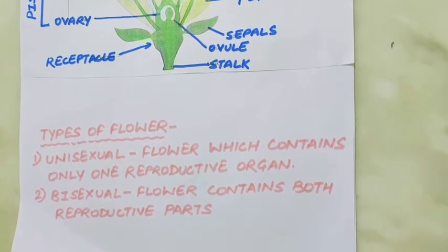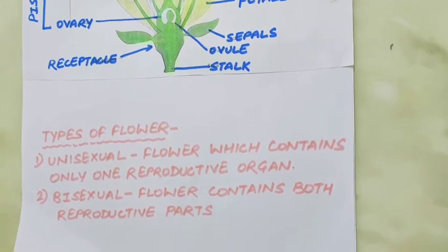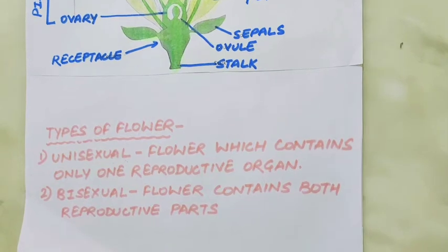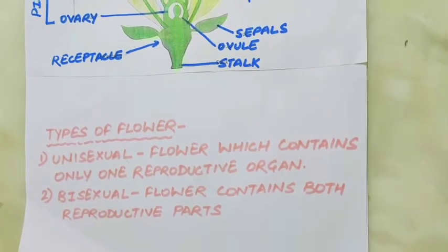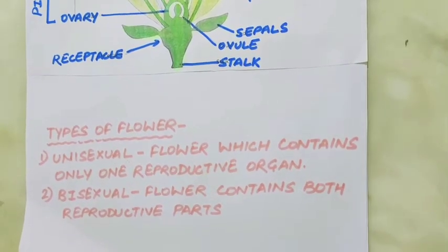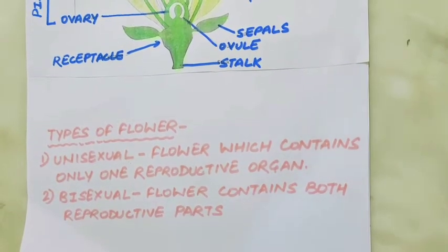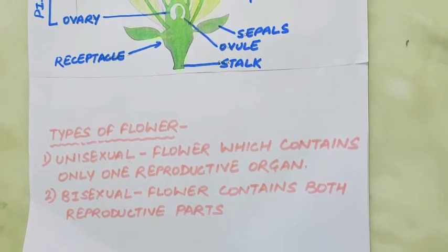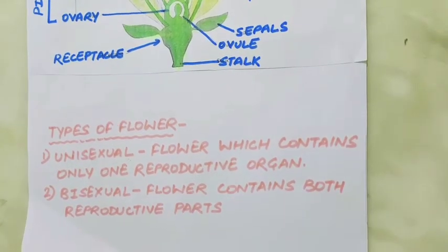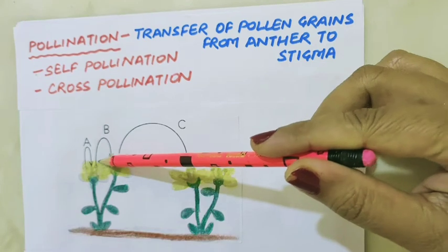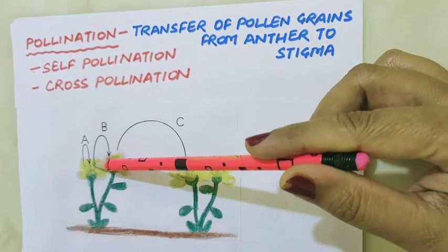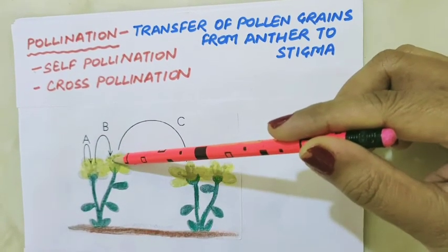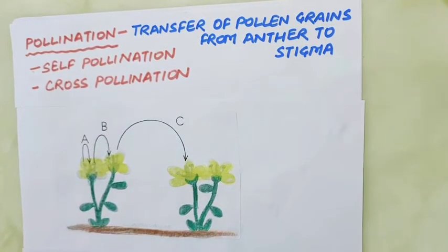During sexual reproduction, male and female gametes fuse to form a zygote. But how does the male gamete reach the female gamete in plants? By the process of pollination. The transfer of pollen grains from the anther of the stamen to the stigma of the pistil is called pollination.